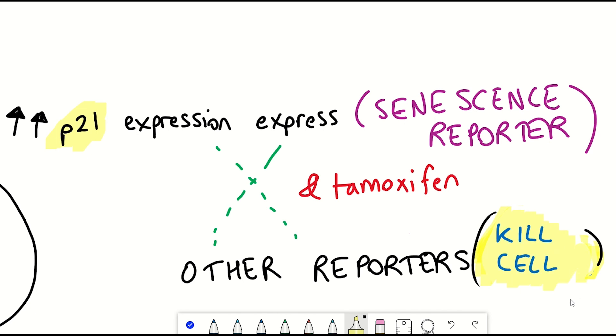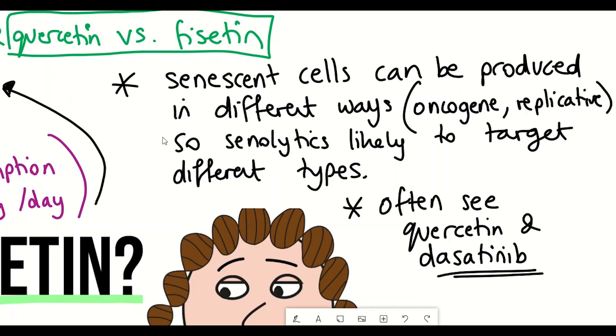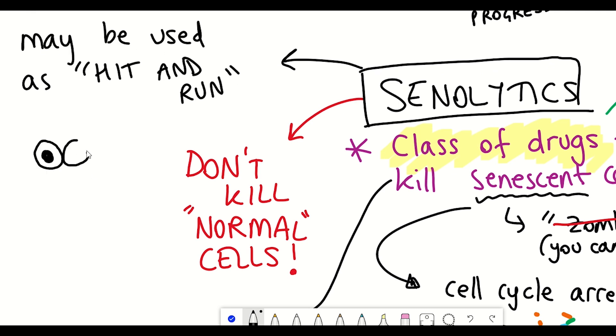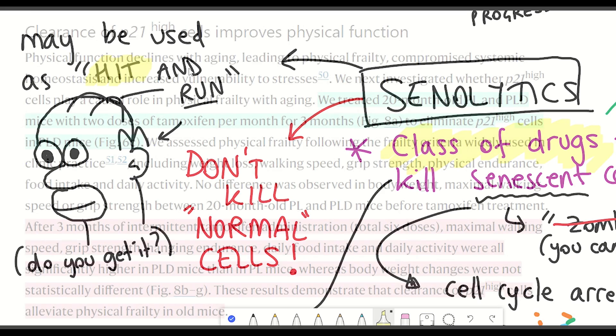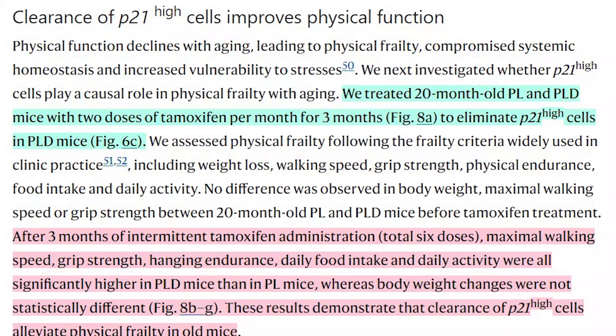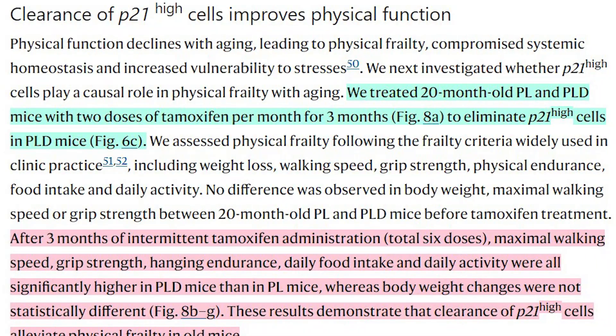And to see how effective the clearance would be, they performed intermittent clearance, which is in line with Jim Kirkland's hit-and-run hypothesis, which is the idea that you're going to clear senescent cells, because they take some time to develop, you may need to only do it every so often. And so here, they treated the old mice with tamoxifen six times over the period of three months. And so remember that this is going to be effectively killing or removing these high P21 expressing cells, which they think are senescent cells.